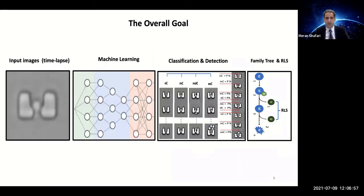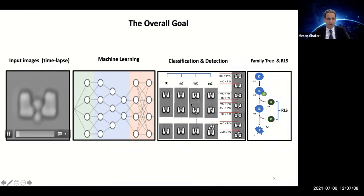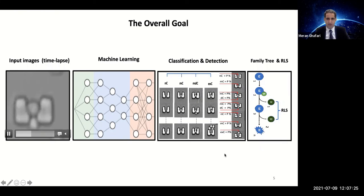The overall goal of this research was to have a system where the input would be microfluidic images, and we can use machine learning to classify these traps and identify cells. We also want to generate a family tree and count the replicative lifespan. The whole goal is to make this system automatic, since much of this cell division, family tree, and replicative lifespan work is currently done in a manual process.